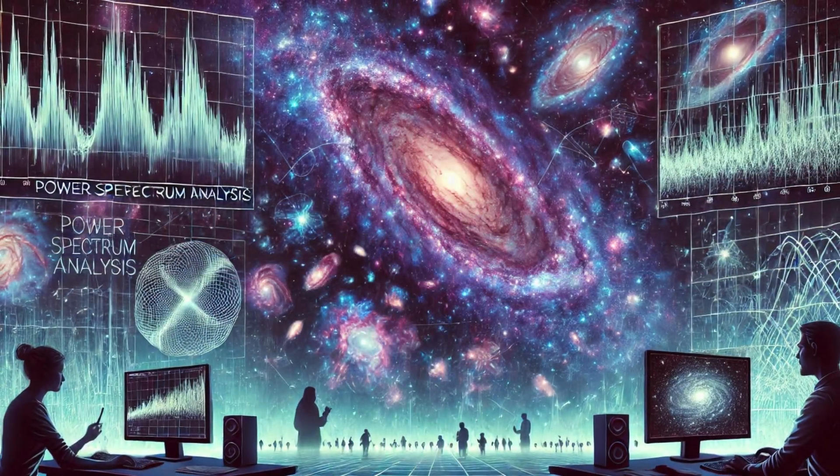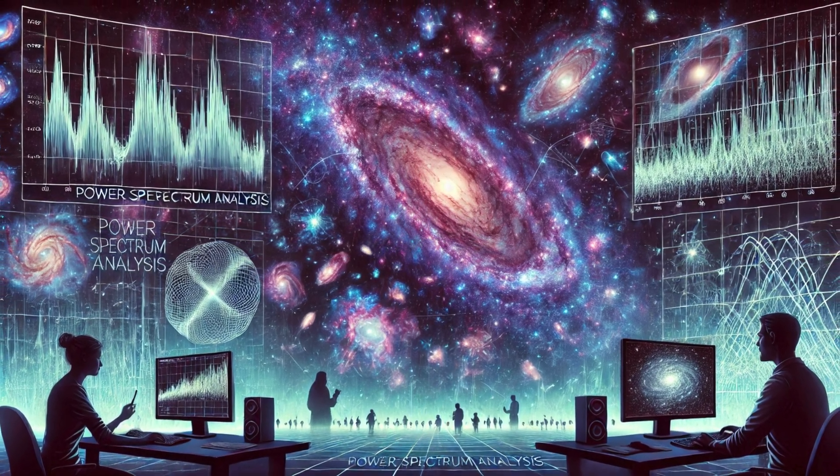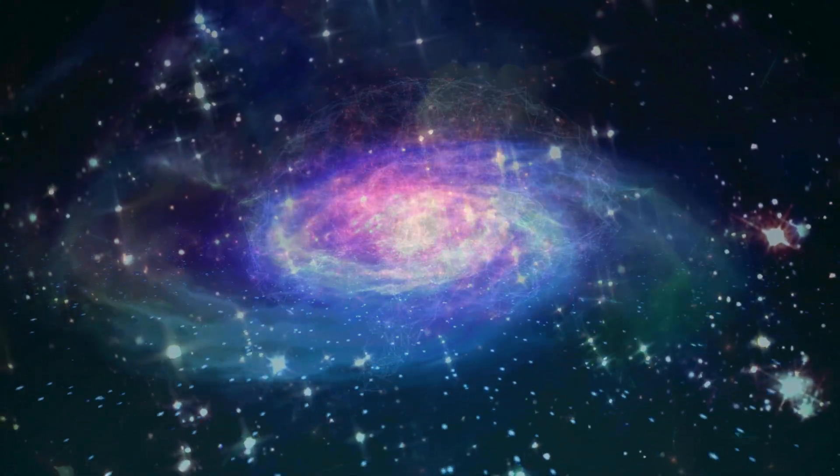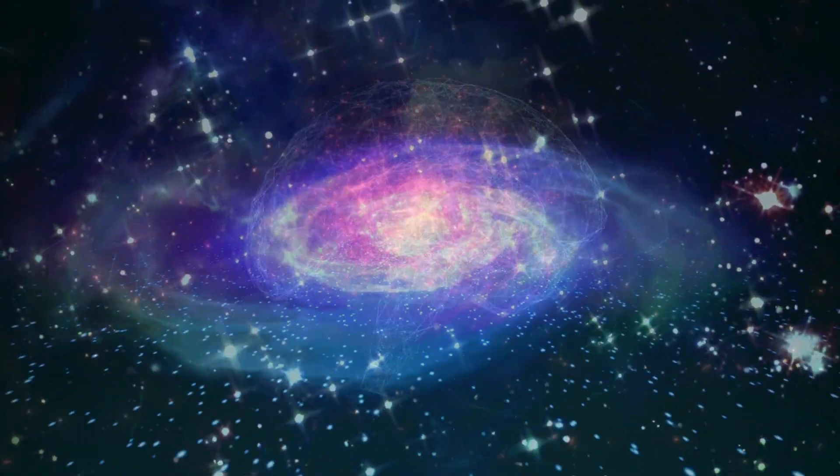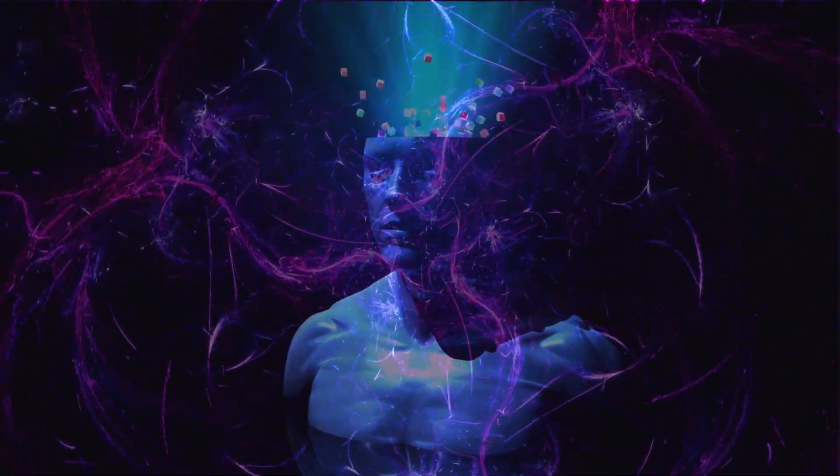They used power spectrum analysis, a technique from astrophysics, to study the large-scale distribution of galaxies and found that the fluctuations in the cosmic web mirrored those in the brain's cerebellum and cerebral cortex.